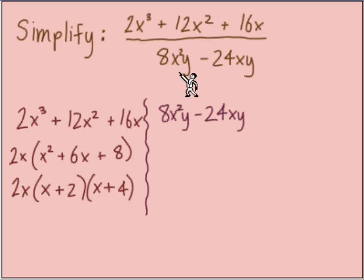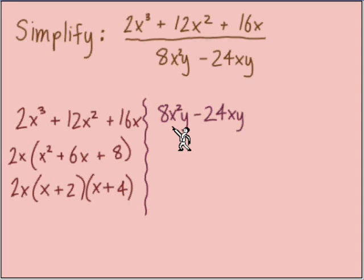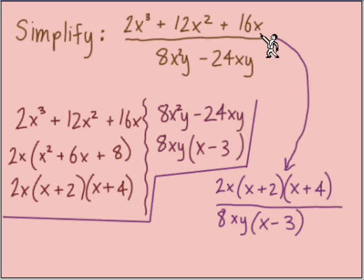It's 2x times x plus 2 times x plus 4 as our factored numerator. Next is the denominator. Looking for the GCF first, we're finding 8xy we can bring out from each of those two terms. And left over in parentheses we have x minus 3.